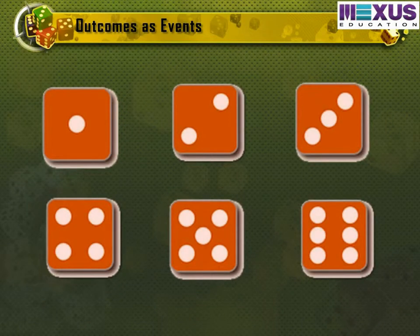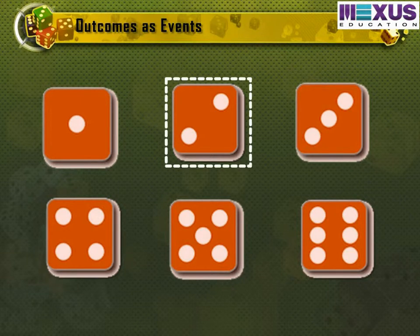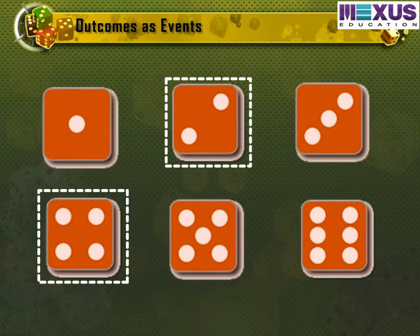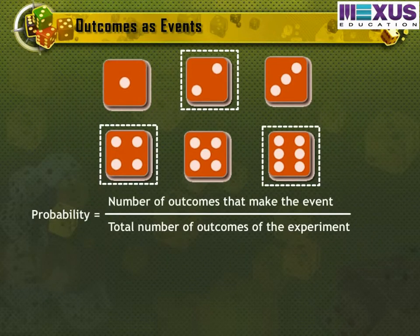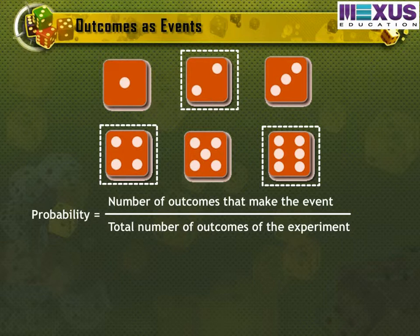What then can be the probability of getting an even number? Let's calculate. From one to six, there are three even numbers, that is, two, four, and six. So the probability would be the number of outcomes that make the event divided by the total number of outcomes of the experiment, that is, three divided by six, which equals one half.